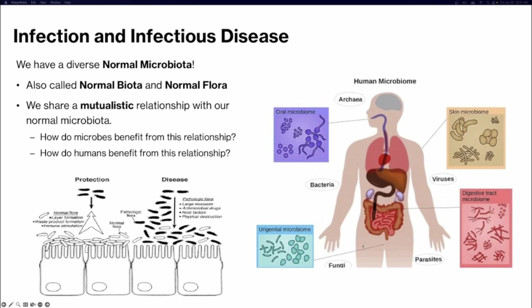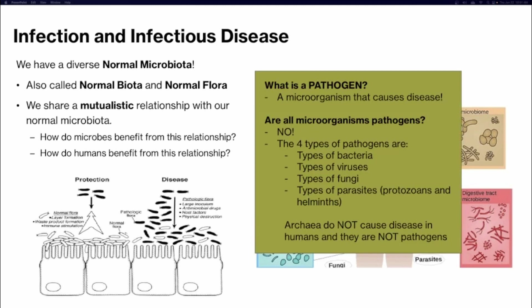Remember that microorganisms are not just bacteria, so lots of things are part of our normal microbiota. That includes archaea, viruses, parasites like protozoans and helminths, and fungi too — these are all part of our normal microbiota.